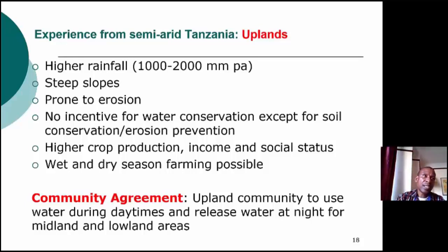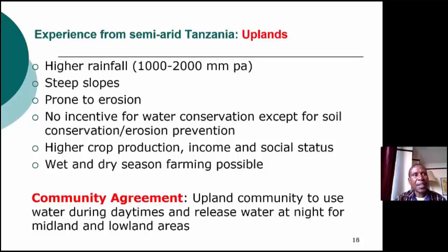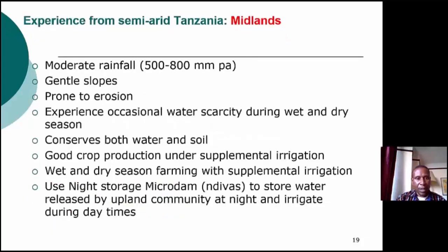These are areas with quite high crop production. In most cases, if it's maize, they plant hybrid maize, and they grow crops during both the wet and dry seasons. In the Makanya subcatchment, there is a community agreement such that people in the upland use water during the daytime and leave water during the nighttime to flow for the midland and lowland communities. Sometimes it works, but in years of below-normal rainfall it doesn't work very well, because there is not enough water even for the upland people — some would wake up at night and irrigate, at the expense of people in the midland and lowland.